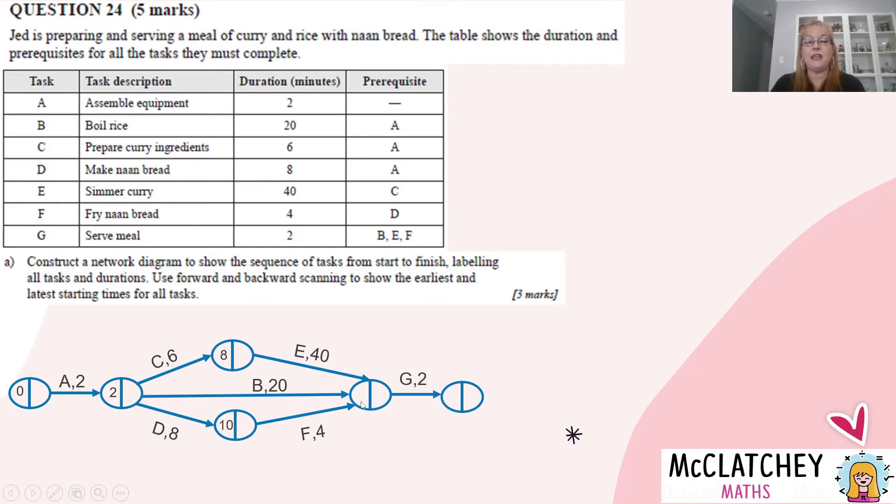But we need to have a think about what's going to go into that bubble. Okay, it'll be the biggest number out of all the choices. So eight plus 40 makes 48. Two plus 20 makes 22. And 10 plus four makes 14. It's got to be the biggest one, because we've got to wait till everything's done before we can start activity G. So that means that 48 from across the eight plus the 40 will go into here.